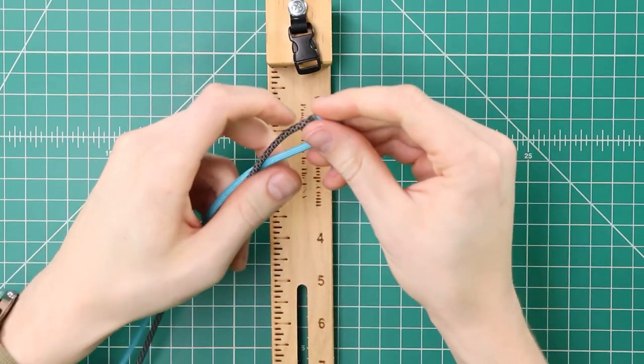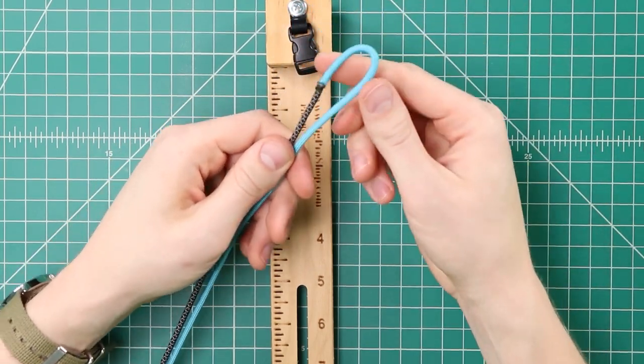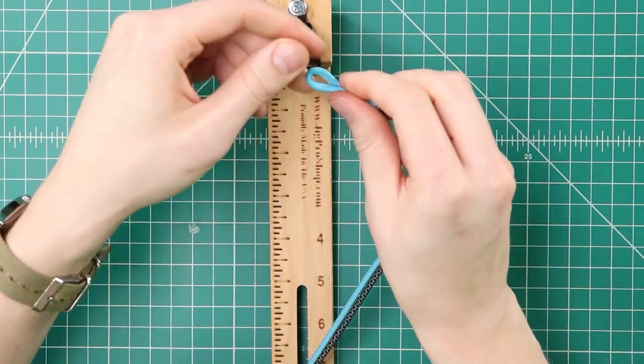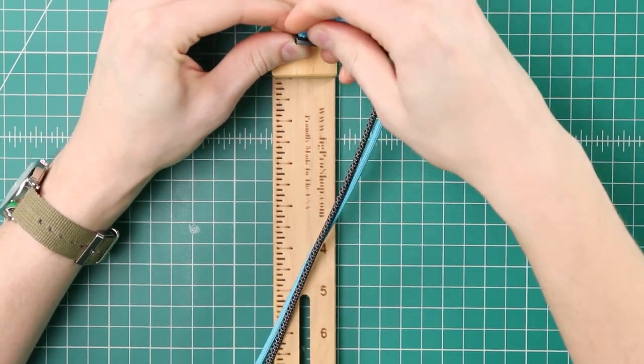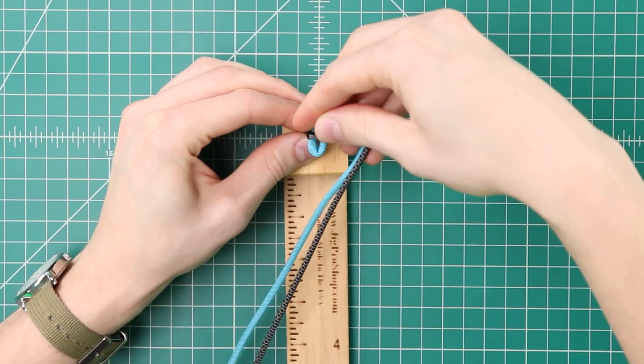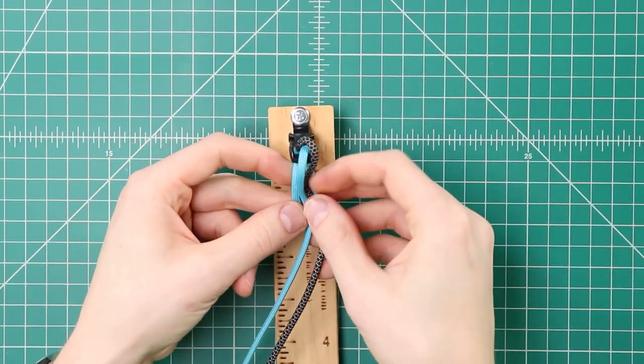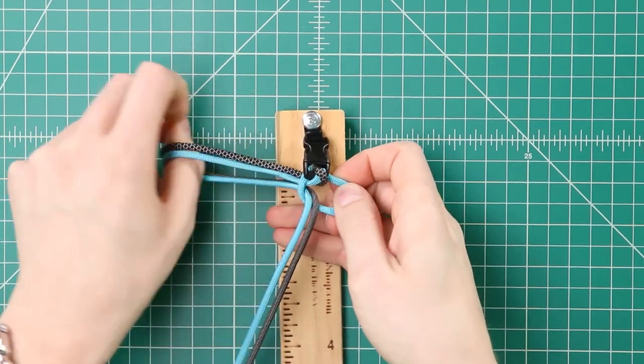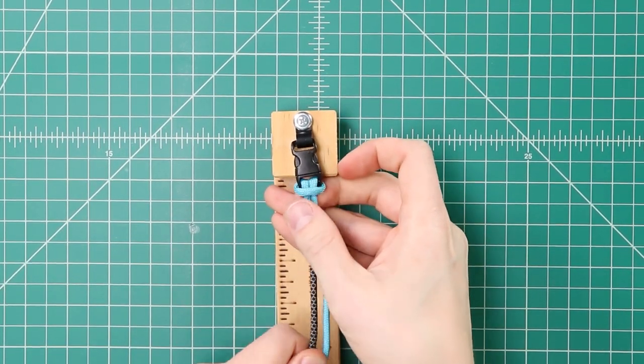Alright so we got our cord cut down. We're just gonna offset our fold a little bit and push that down through our top buckle. Once you have that fold through you can just tuck both cords down through that loop. And there's our top cow hitch with the two colors.